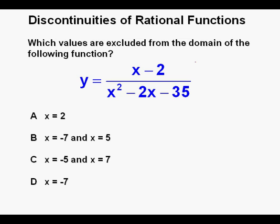Here's our next problem in multiple choice standardized test format. Which values are excluded from the domain of the following function? We have y equals x minus 2 over x squared minus 2x minus 35. Our answer depends on the denominator x squared minus 2x minus 35 being equal to 0.